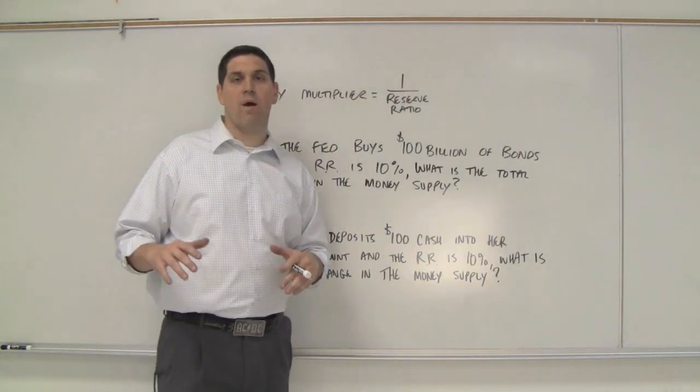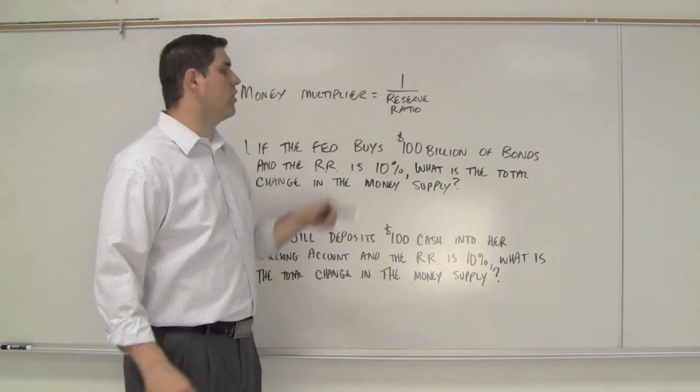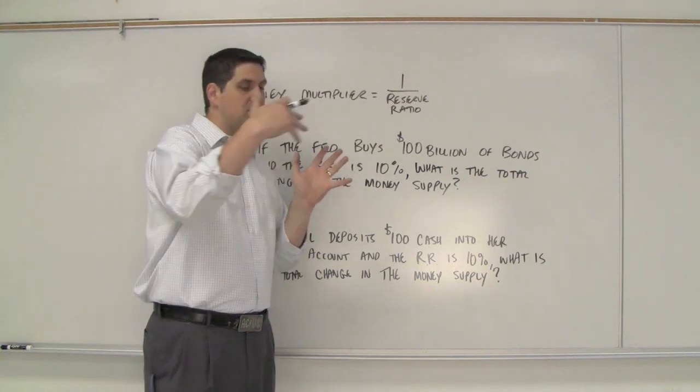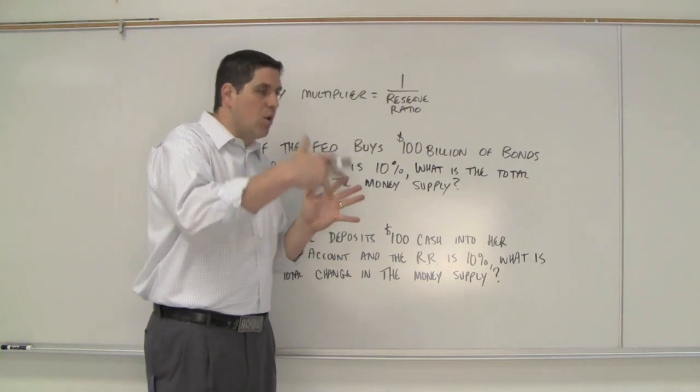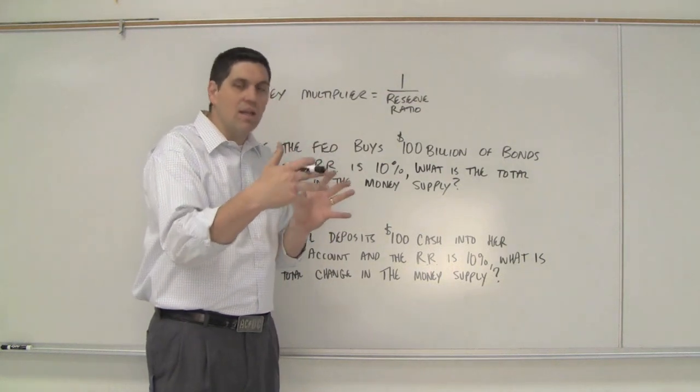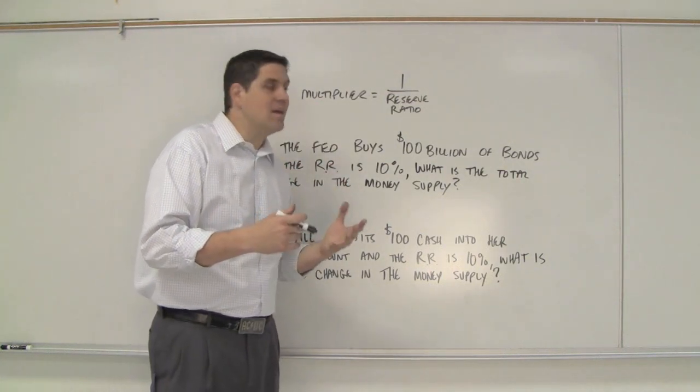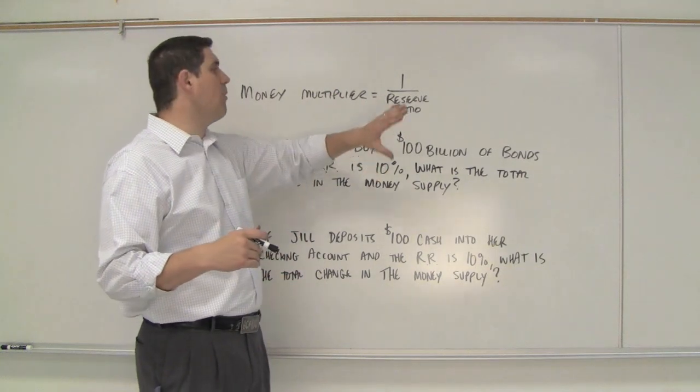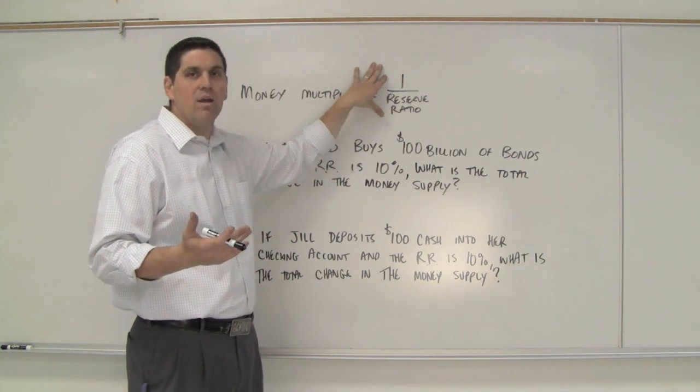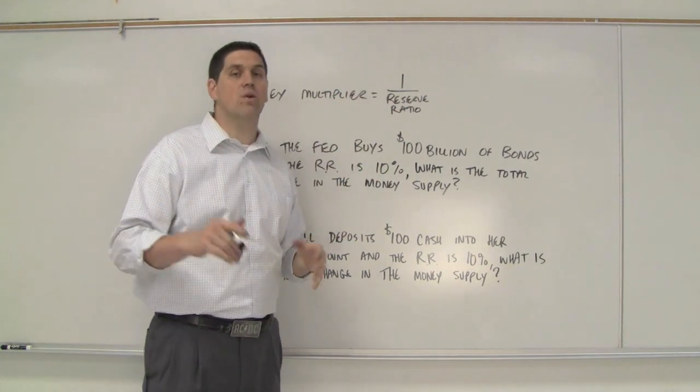This is called the money multiplier. The money multiplier is one over the reserve ratio. If money comes into a bank, it'll get loaned out and loaned out and keeps getting loaned out. Some of this gets saved, the rest gets loaned out. When that happens, however much money came in, multiplied times the money multiplier tells you how much money actually gets created.